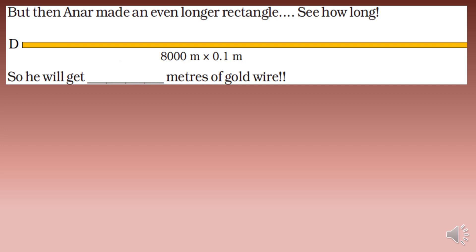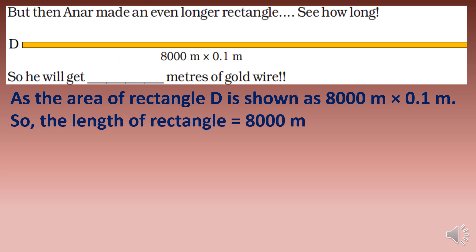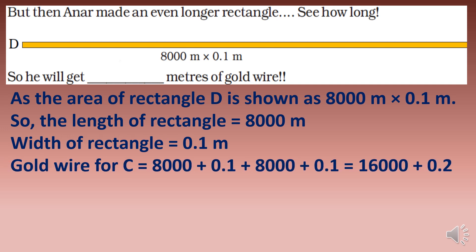Anar made an even longer rectangle D: 8,000 meters multiplied by 0.1 meters, which still gives an area of 800 square meters. The gold wire for rectangle D is 2 times (8,000 plus 0.1), which equals 16,000.2 meters. Anar would get 16,000.2 meters of gold wire!